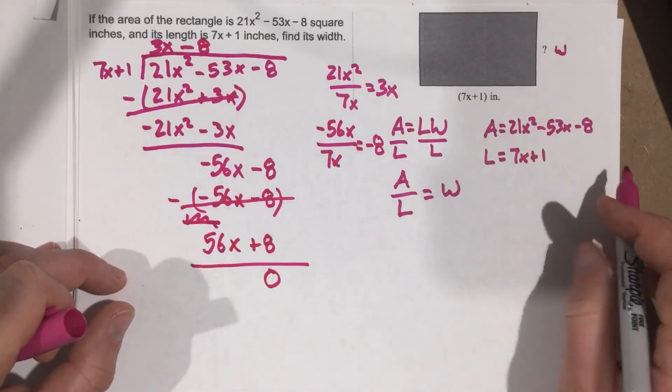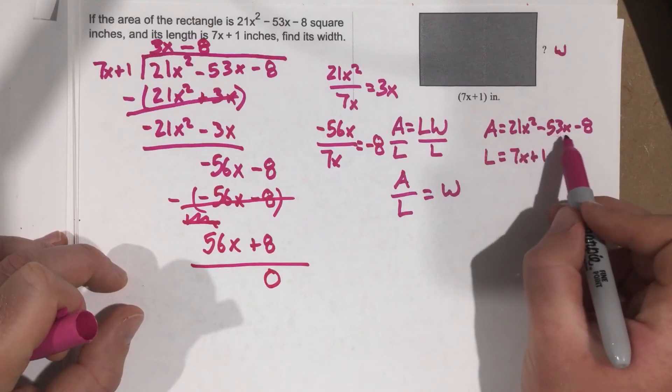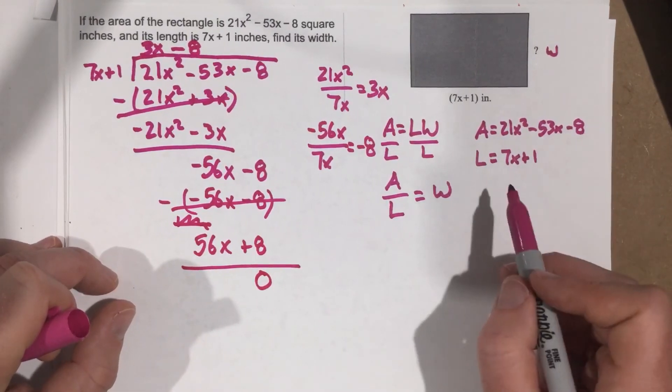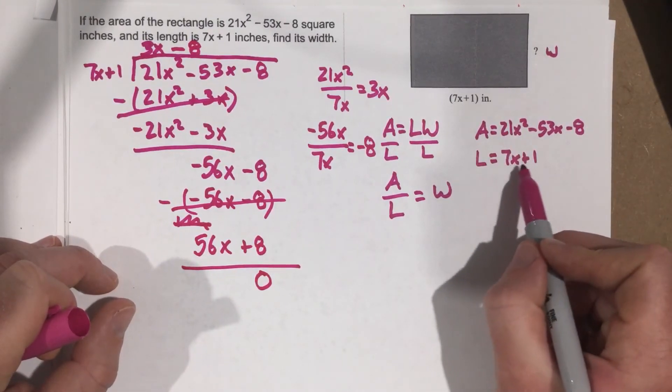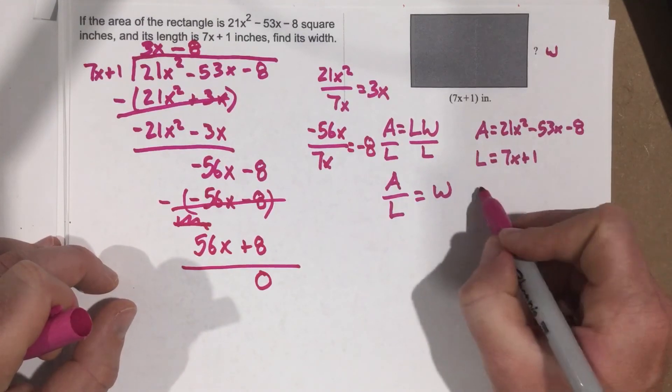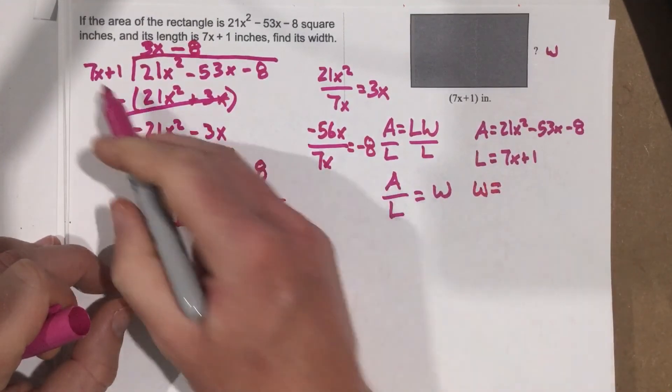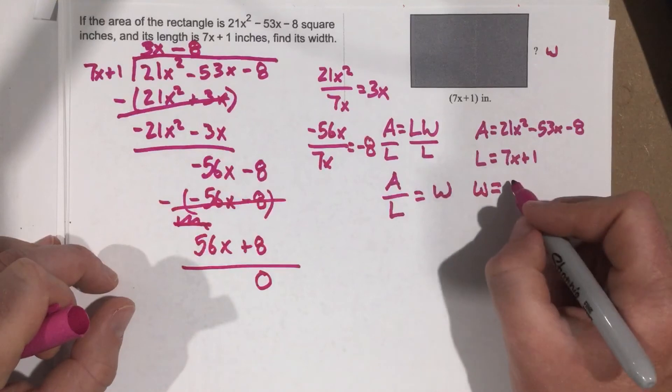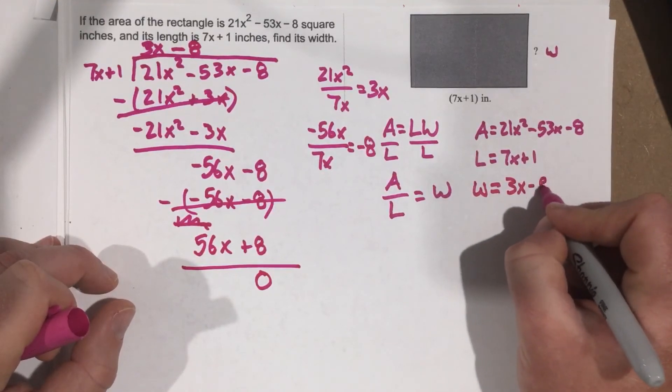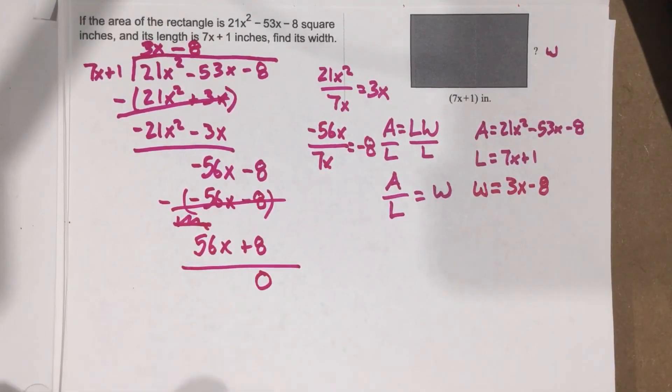So our area is 21x squared minus 53x minus 8. Our length is 7x plus 1. And our width is 3x minus 8. And that's how you find the width when given an area and a length. You just use division.